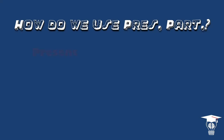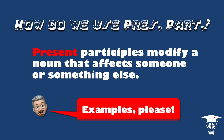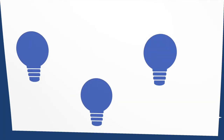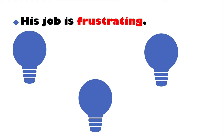How do we use present participles? Well, present participles modify a noun that affects someone or something else. Let's look at some examples. The first example: his job is frustrating. A frustrating job.